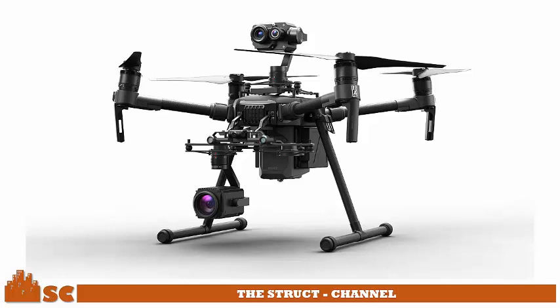Drones also have accelerometers, gyroscope, magnetometer, barometer, and GPS as common drone features. With this kind of drone, a lidar can be attached. When you fly the drone with this equipment, you can see the colors and broad spectrum of thermal energies.